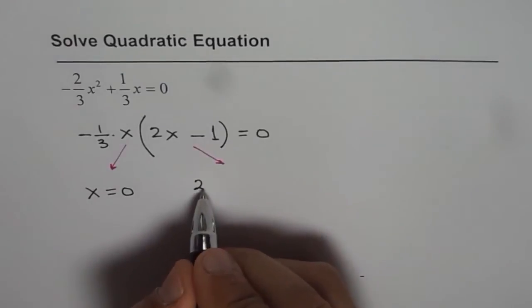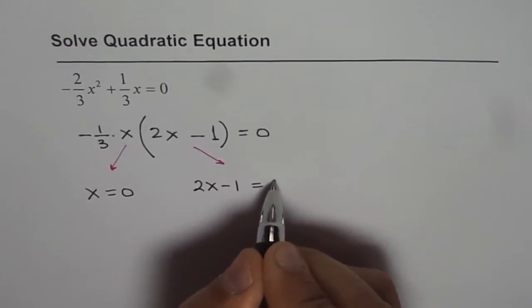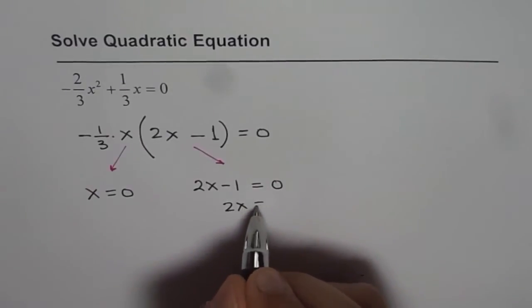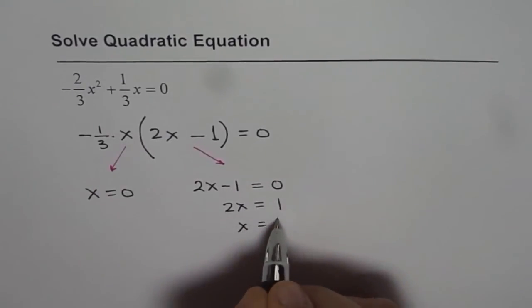The other solution is 2x minus 1 equals to 0, right? So now we can solve for x. We have 2x equals to 1 or x is equals to half.